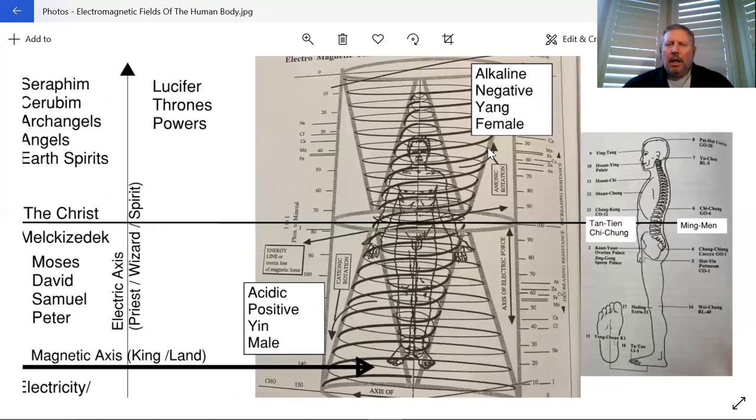This is a drawing from the biological ionization of the human within the space of the vertical axis being the electric. It's what we call the alkaline and the negative energy, which is also yang, which is also female. We get this vortex that comes down.